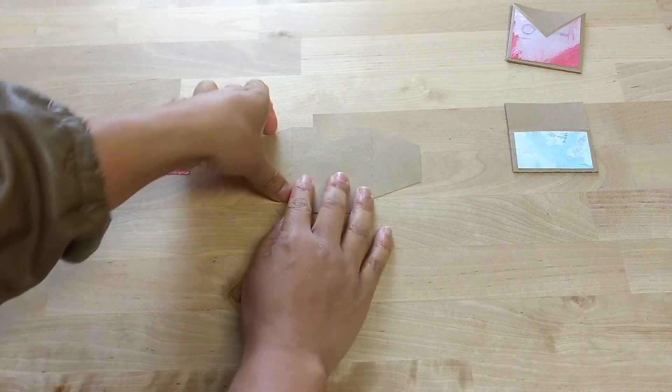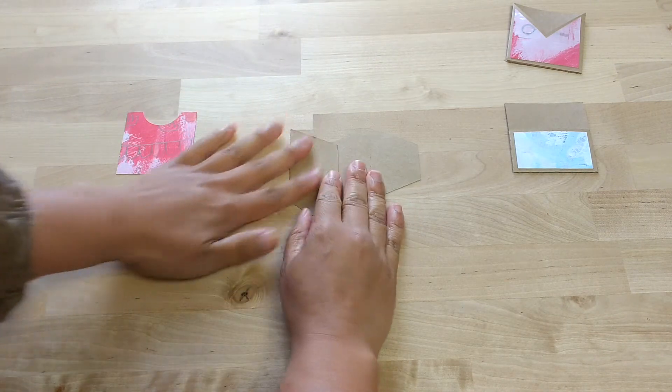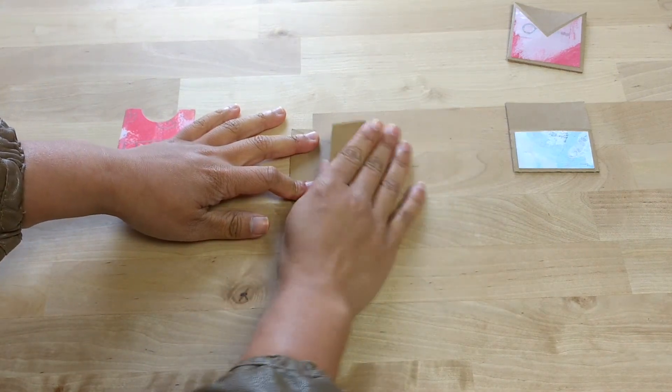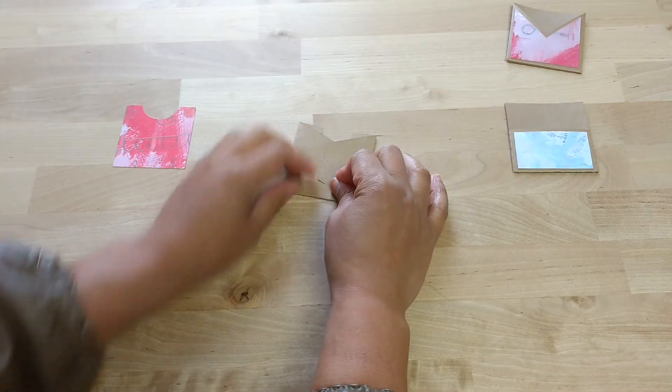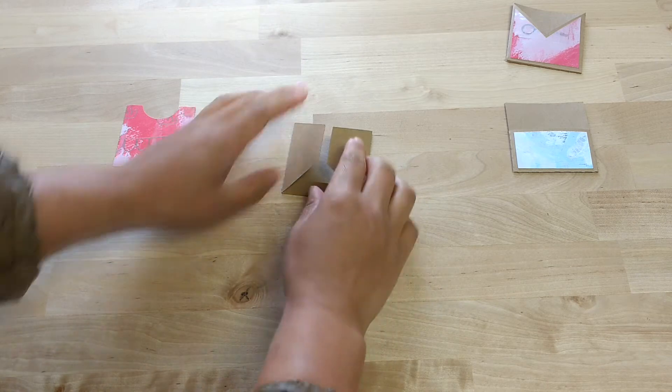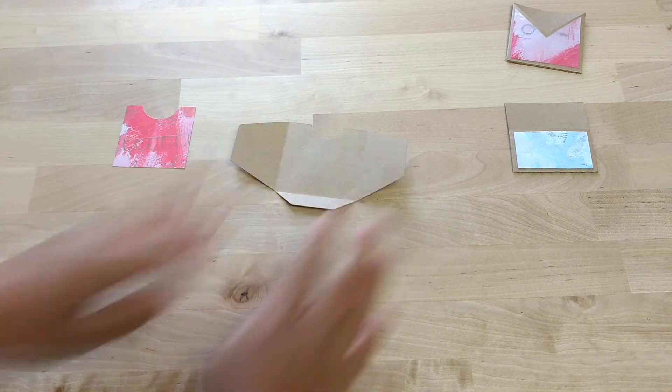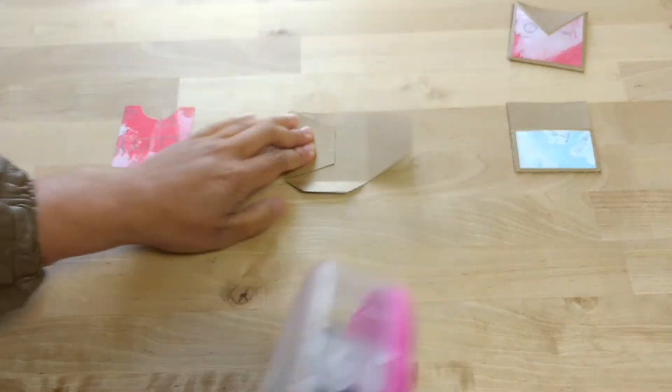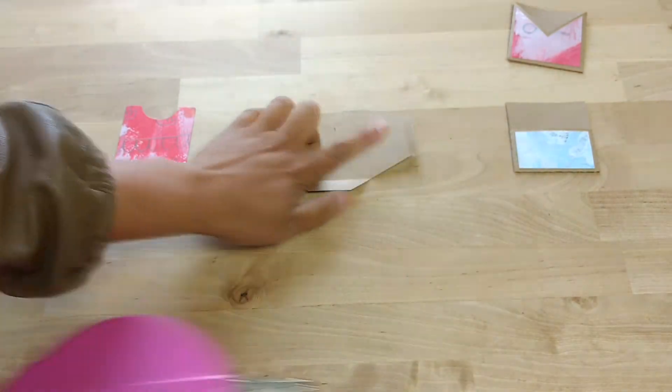The last pocket here has a little notch cut out at the top for you to be able to pull any tags or inserts out easily. In the video the tab at the bottom is slightly shorter but I have changed it in the template so no worries there.